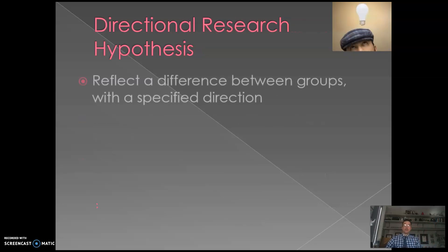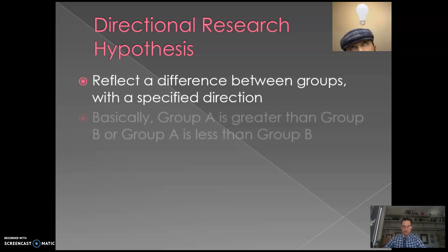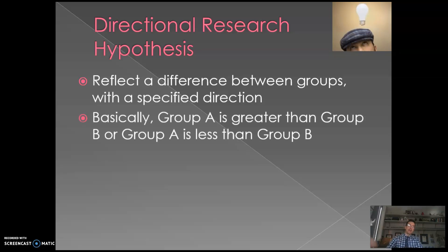By contrast, we also have directional research hypotheses — also called directional alternative hypotheses, which are synonymous. In this case, we're saying yes there is a difference, and it's going to look like this: something is going to go up, something is going to go down, one thing will be better and one worse. Essentially, Group A is greater than Group B, or vice versa — the group you're in makes a difference on how you perform.